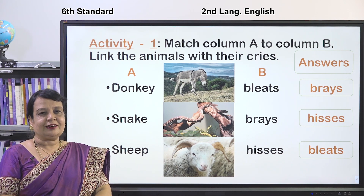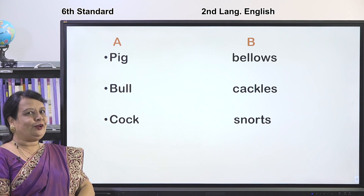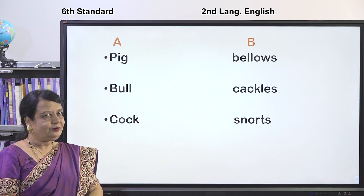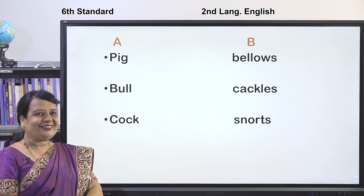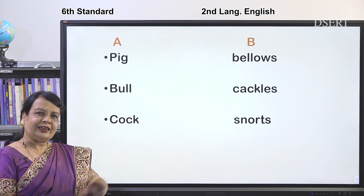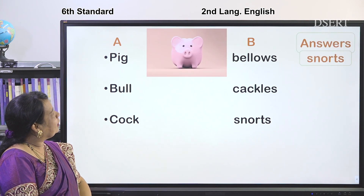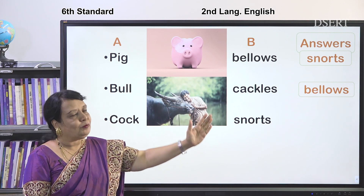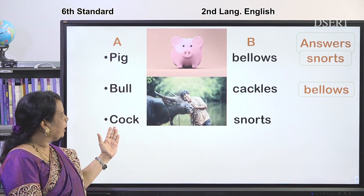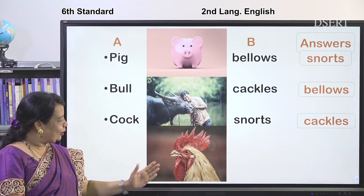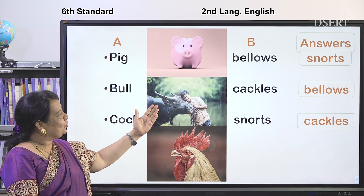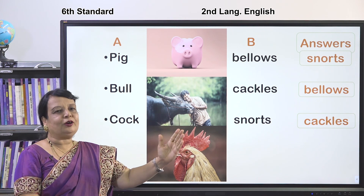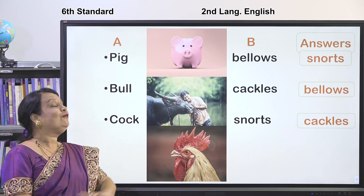I have three more animals for you — a pig, a bull, and a cock. The pig snorts. The bull bellows. The cock cackles. All these are animals. You can see the man loving the bull — he is a farmer who uses the bull to plow the field.